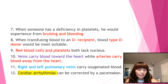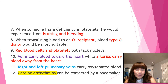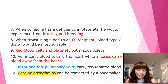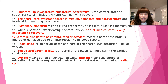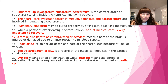Number twelve: cardiac arrhythmias can be corrected by a pacemaker. Number thirteen involves a sequencing question — endocardium, myocardium, epicardium, and pericardium is the correct order of structures starting inside the ventricle and going outward. If asked for the inward order, the answer would be reversed: pericardium, epicardium, myocardium, and endocardium.